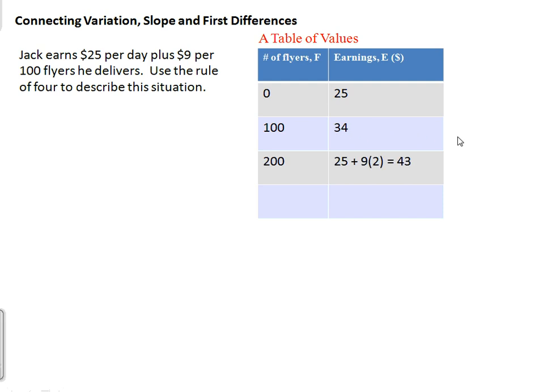Similarly, for 200 flyers he gets his base rate of $25 plus $9 for each group of 100 flyers delivered. Since he's delivered 200, that's multiplying 9 by 2. We can use a similar method to find his earnings for 300 flyers. And there's our completed table of values.